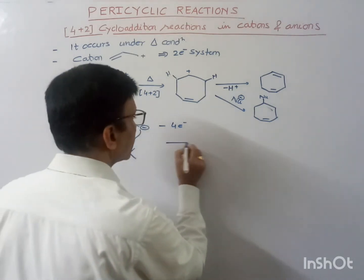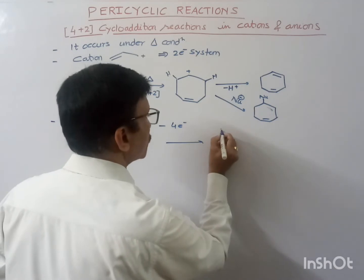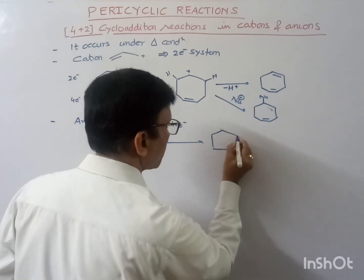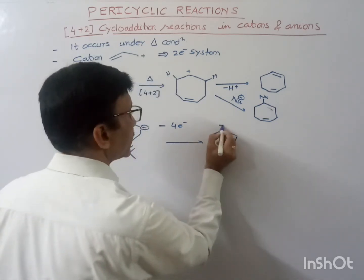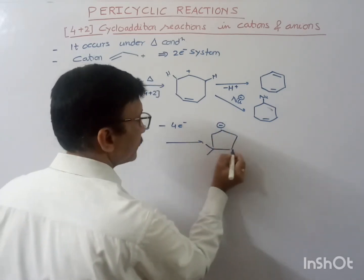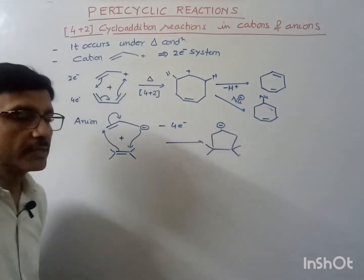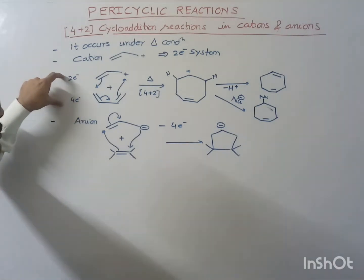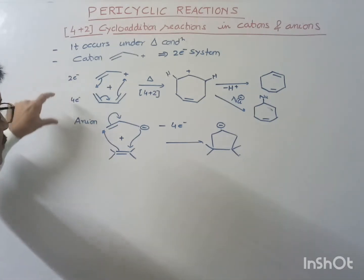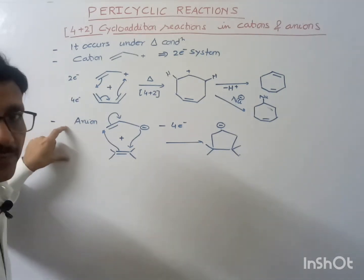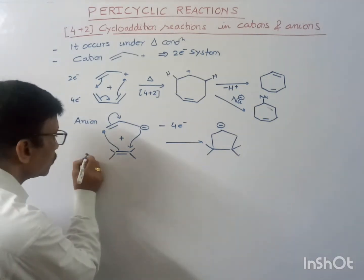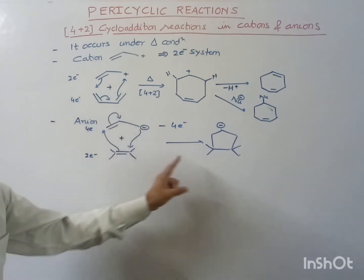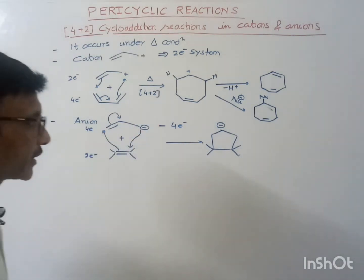So what you will get over here: we will get a 5-membered ring and one of the negative charge over here, and we are getting this 5-membered ring. So this is the 4 plus 2 cycloaddition reaction with cation, and this is the 4 plus 2 cycloaddition reaction with an anion. This is a 2-electron system, this is a 4-electron system, and the 4 plus 2 cycloaddition product we are getting.